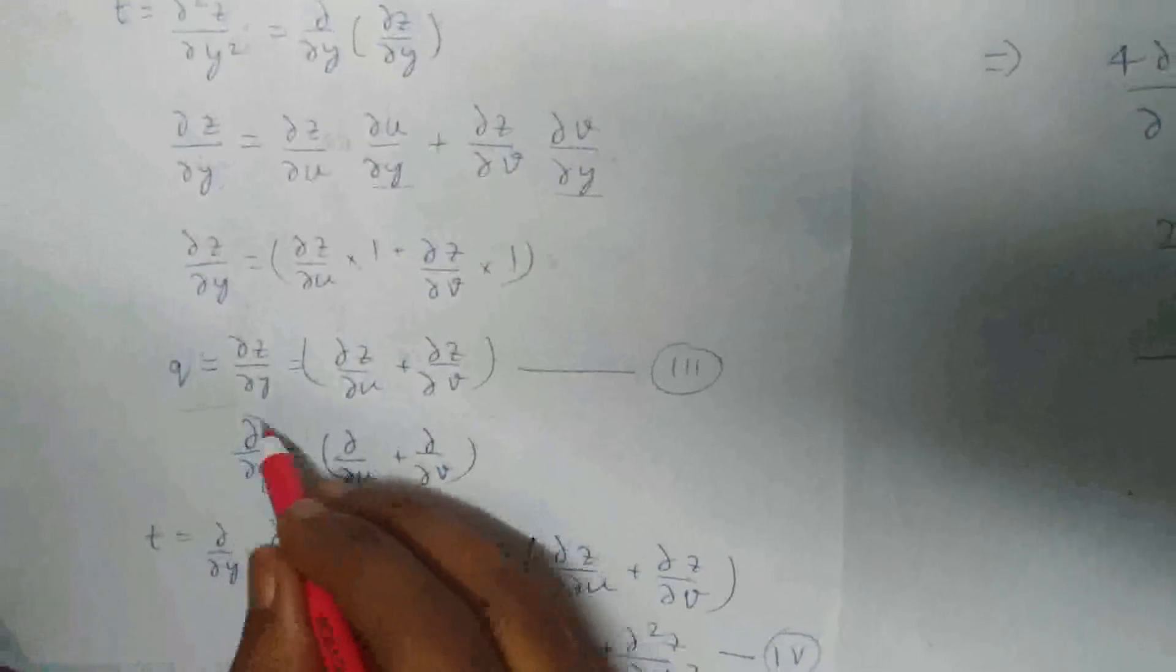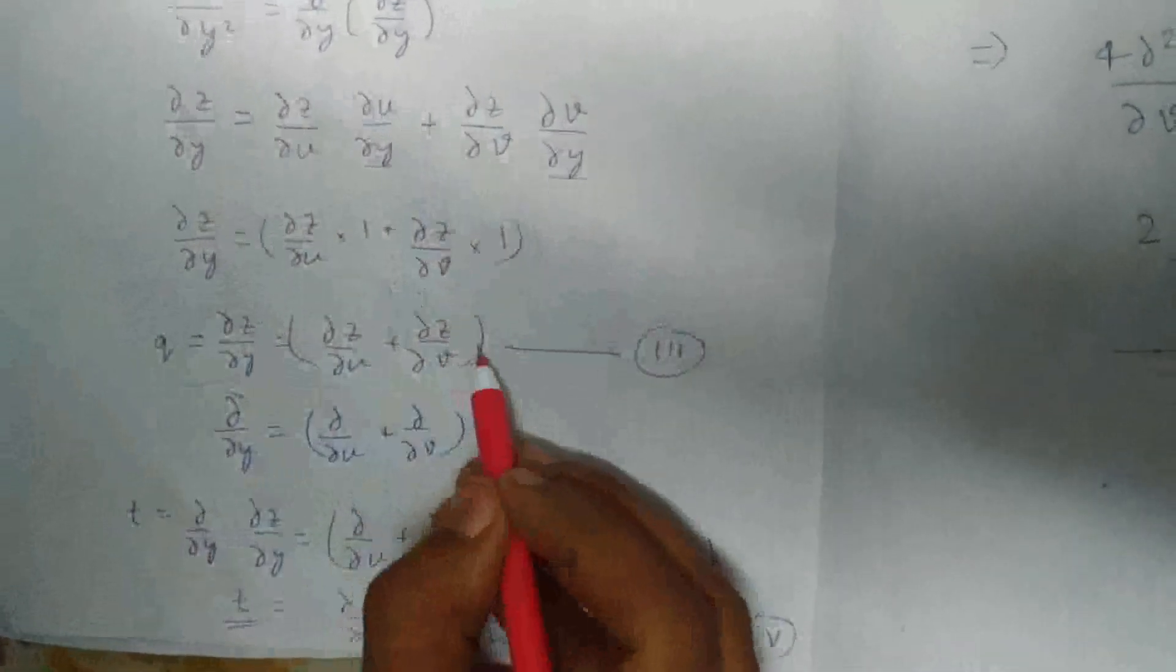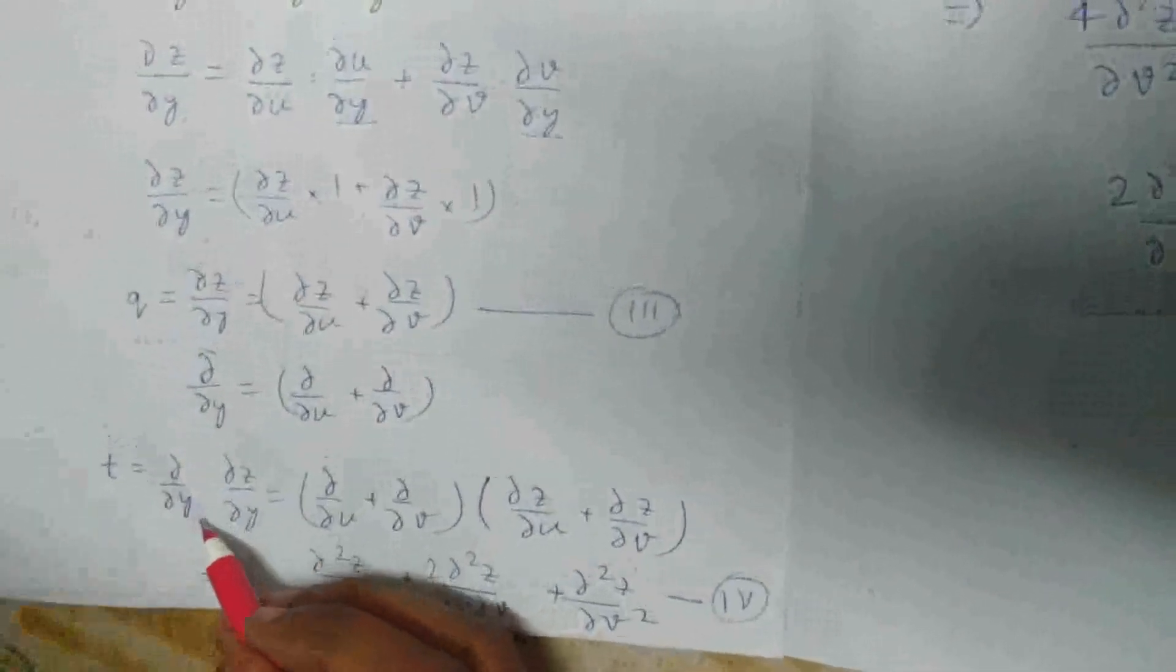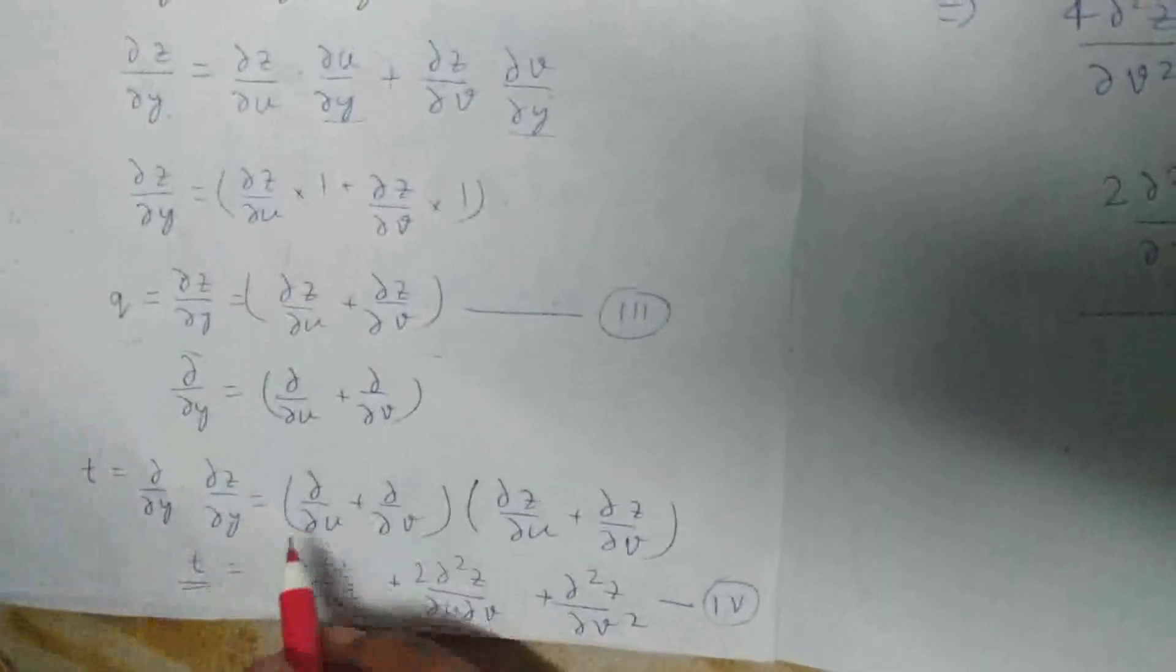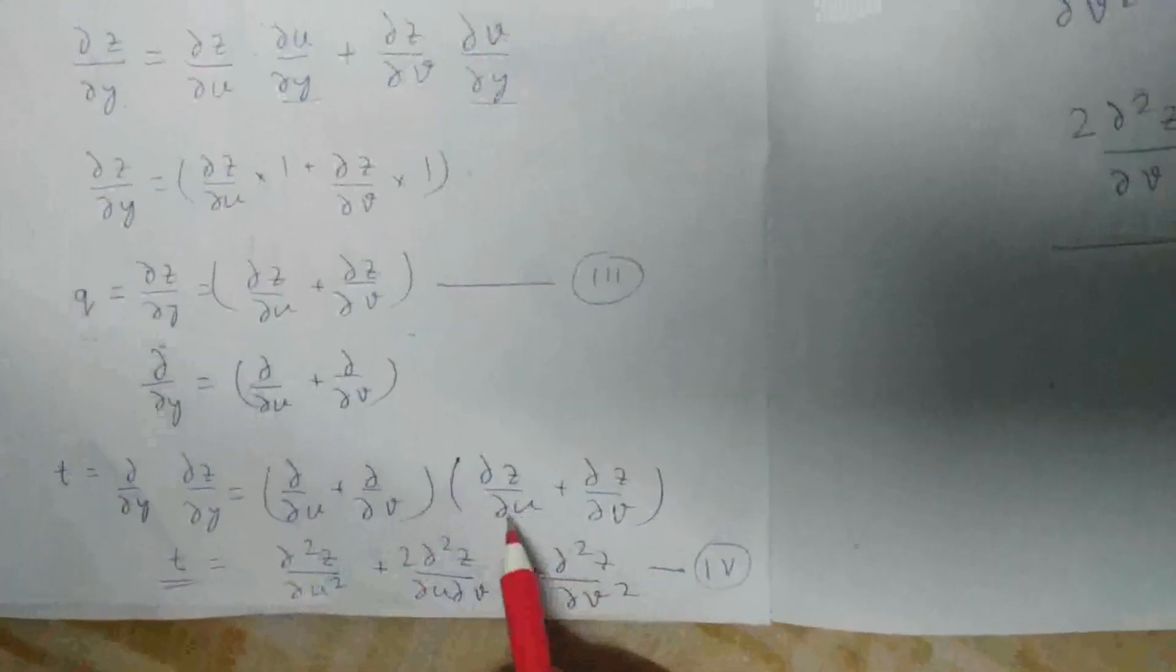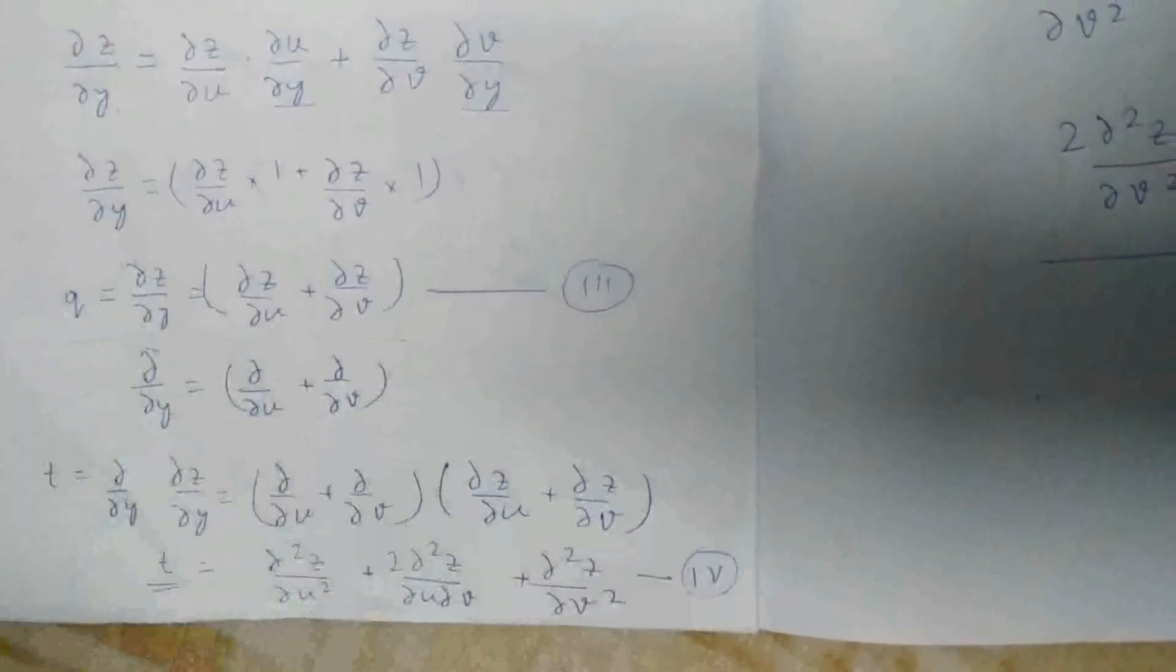Again we obtain the value of operator d/dy. We get this by eliminating z from both sides. And again, t is d/dy times dz/dy, which I've already mentioned. Similar as we did earlier, we're going to multiply both of these and obtain the value of t, which is equal to this in this question.